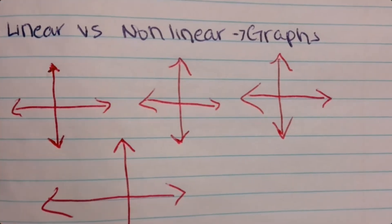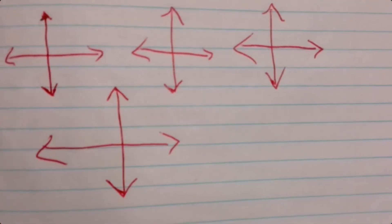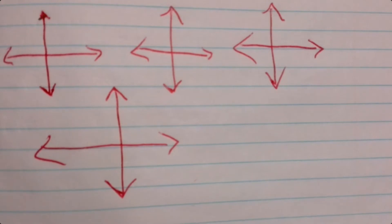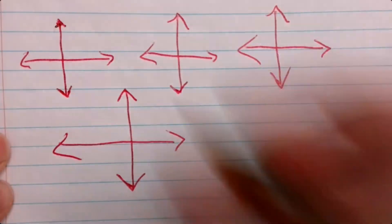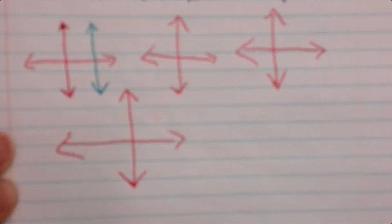In the first coordinate plane, draw a line with an undefined slope, so that means a straight line up and down.